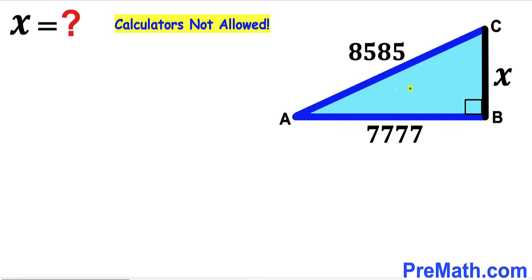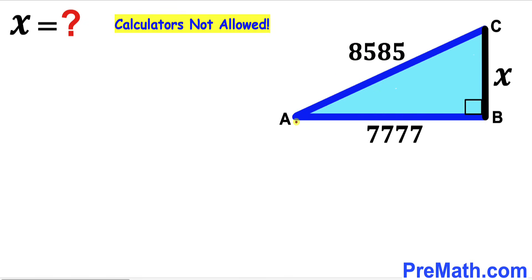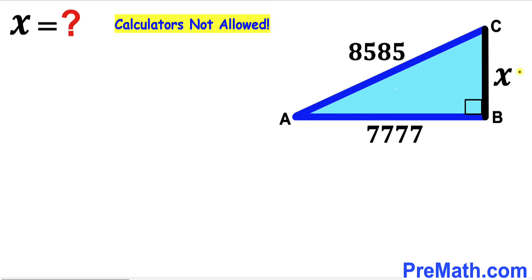Welcome to pre-math. In this video we have got a right triangle ABC, as you can see in the given diagram, such that its hypotenuse AC is 8585, and moreover one of its legs AB is 7777, whereas leg BC is represented by X. Our task is to find the value of X.